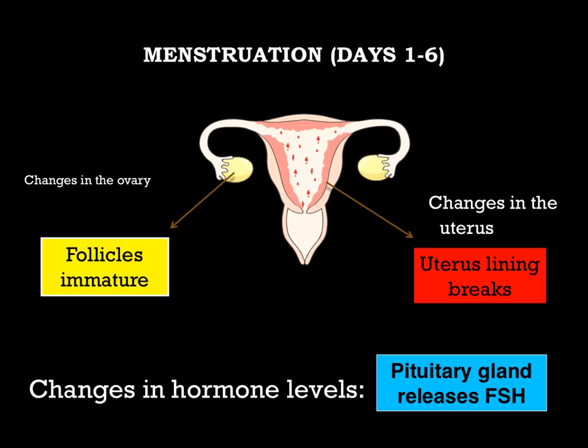Looking at days 1 to 6 in detail: this is the menstruation, or bleeding, period. In the ovaries, the follicles are currently immature — the follicles are what contain the developing egg. Meanwhile, in the uterus, the uterus lining is breaking down and blood is leaving. In terms of hormone changes, the pituitary gland begins releasing FSH, the follicle-stimulating hormone, which will cause the follicle to start to develop.